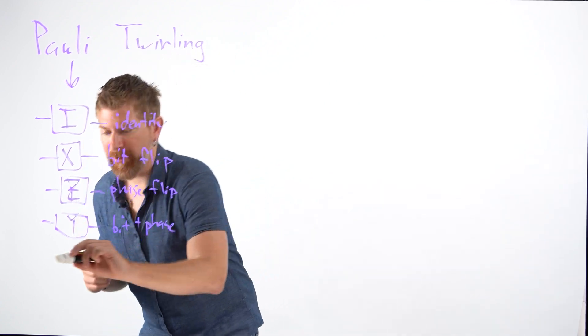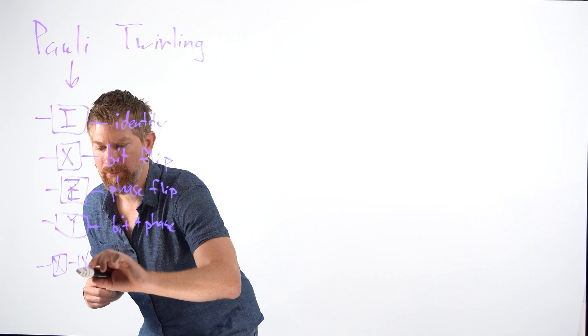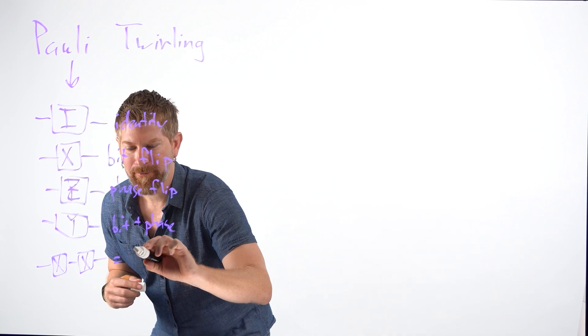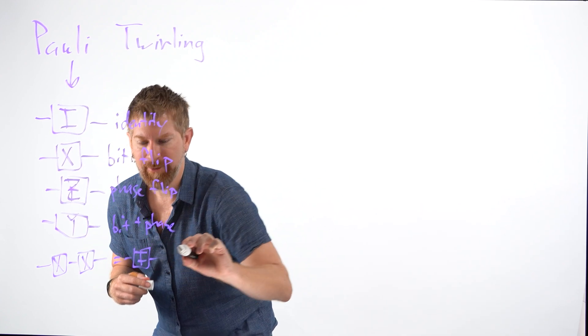One of the things you should know about this is if you take any two of these and put the same one in order, they cancel each other out. So two X's is the same as the identity.